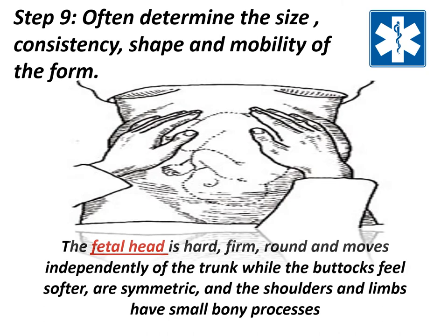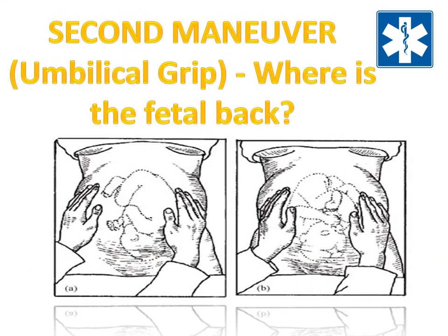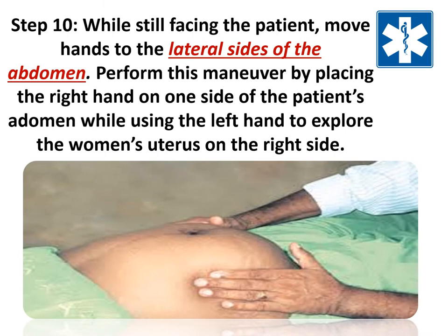Step ten: while still facing the patient's head, move hands to the lateral sides of the abdomen. Perform this maneuver by placing the right hand on one side of the patient's abdomen. Step eleven: use the left hand to explore the woman's uterus on the right side, then repeat this step on the opposite side using the opposite hand. Remember: the fetal back is smooth and firm; the extremities of the fetus should feel like protrusions and small irregularities.